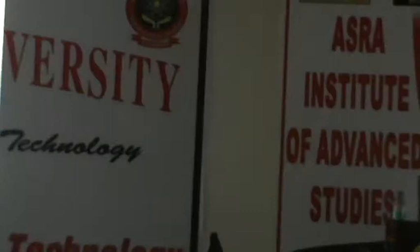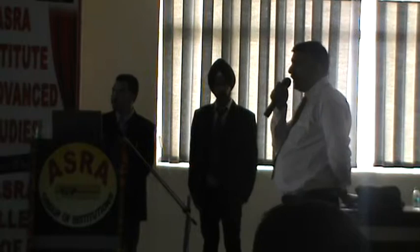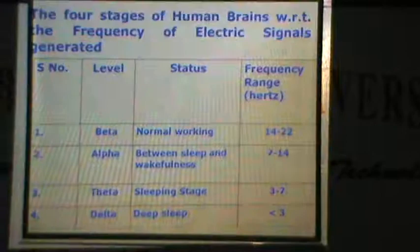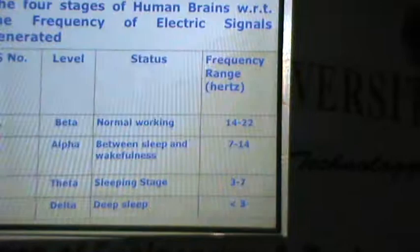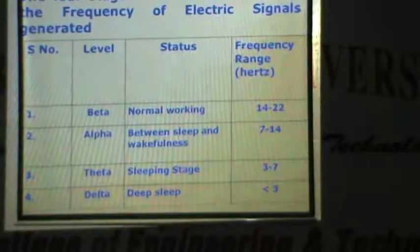The third one is Theta level — the sleeping stage — having a frequency range of 3 to 7 hertz. The fourth and ultimate one is Delta level: deep sleep, which we usually experience around 1 a.m. to 3 a.m. It is less than 3 hertz at that time.